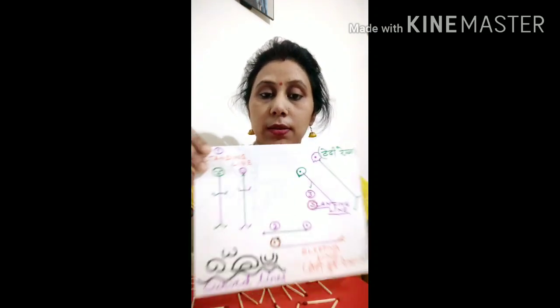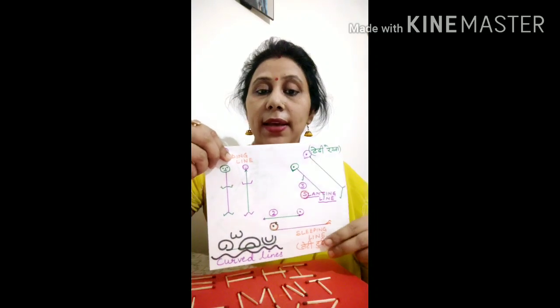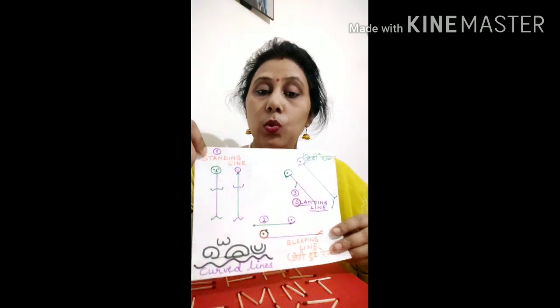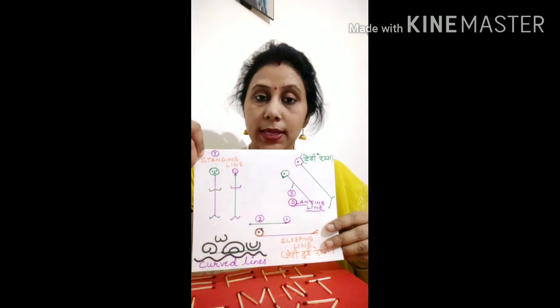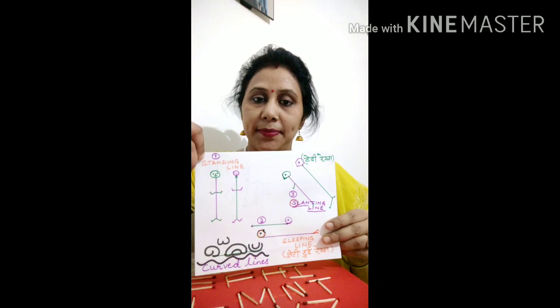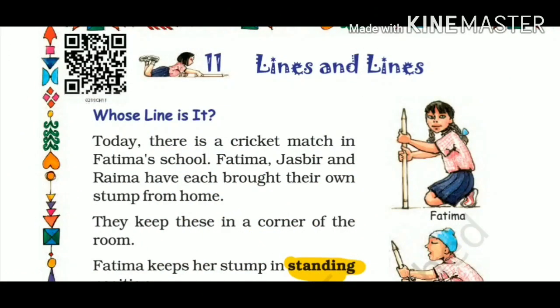Hope you enjoyed the first part of the video, in which we did many activities to understand the four different types of lines: standing lines, sleeping lines, slanting lines, and curved lines. Now we will move to the second part — we will do the whole chapter from the NCERT book itself. This is Chapter 11: Lines and Lines.